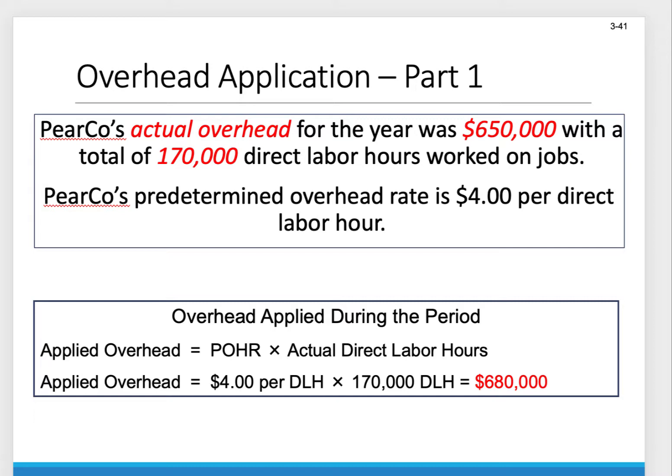We already know how to apply overhead. We take the $4 predetermined overhead rate and multiply it by the actual direct labor hours. In this case the actual direct labor hours are 170,000, so we take $4 times 170,000 hours — we actually applied $680,000. We actually incurred $650,000 and applied $680,000. Did we underapply or overapply? We overapplied — we applied more than we actually had.